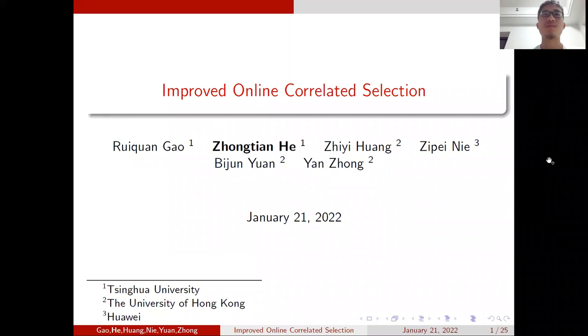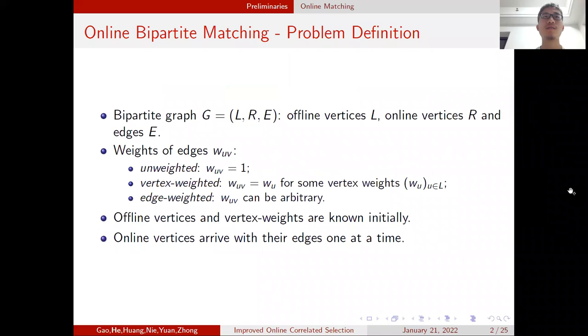Hello, everyone. I'm Zhong Tianhe. I'm talking about our paper, Improved Online Correlated Selection. This is a joint work with Rui Quanggao, Chi Yi Huang, Zi Pei Nien, Bi Junyuan, and Yanzhong.